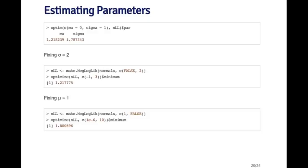Now I can call optim on my NLL function, passing it some initial values: mu equal to zero and sigma equal to one. When it optimizes the function, the estimates turn out to be 1.2 for mu and 1.78 for sigma — pretty close to the truth, which was one and two. Now if I wanted to, I could fix sigma to be equal to its true value and then just optimize over mu to get the mean.